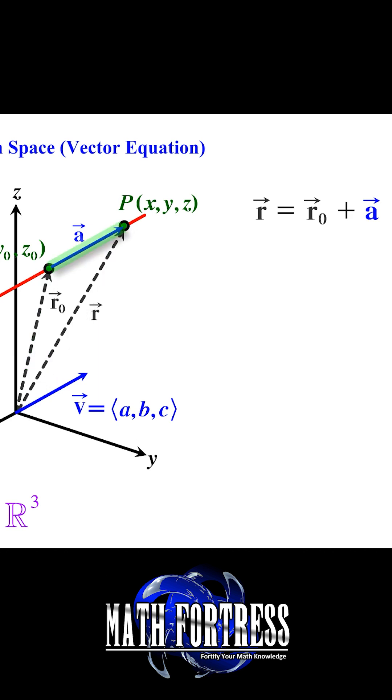Also notice that both vector A and vector V are parallel. This means that vector A is equal to a constant multiple of vector V. For this scenario, let's use the constant T instead of the usual constant C that we used in previous videos.